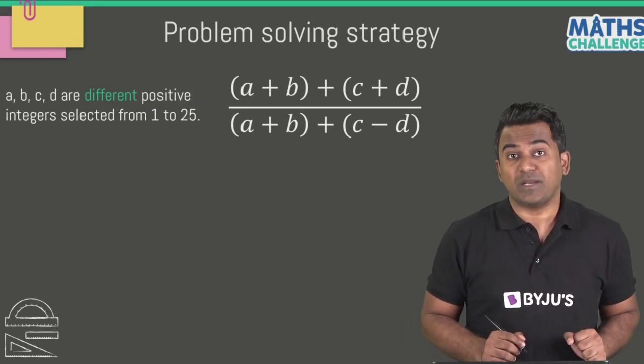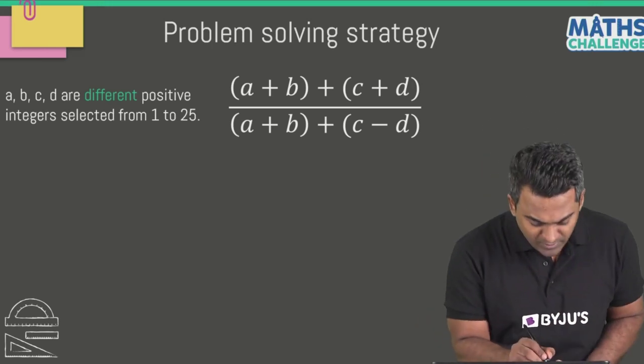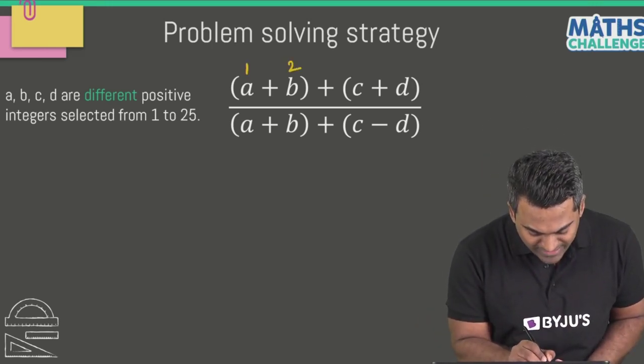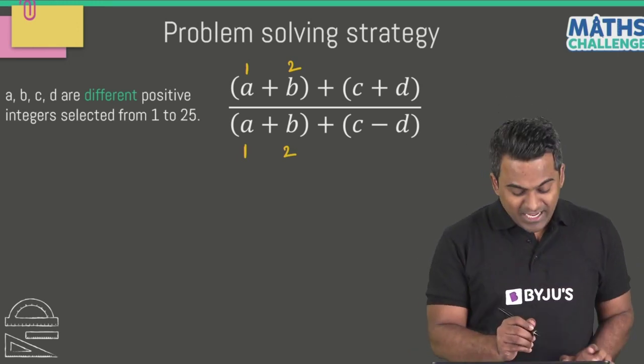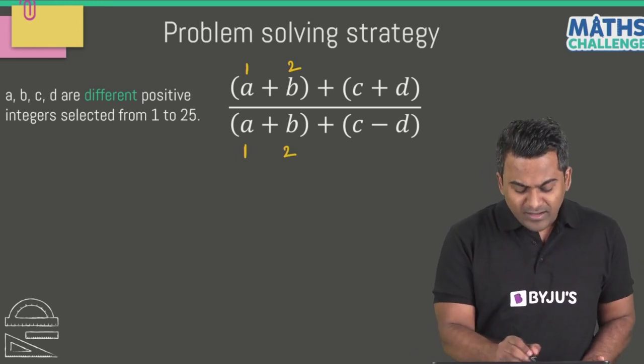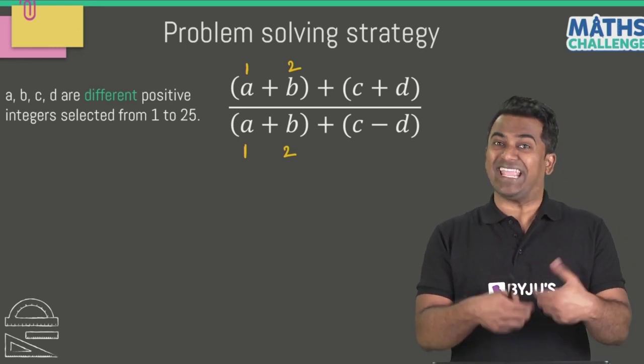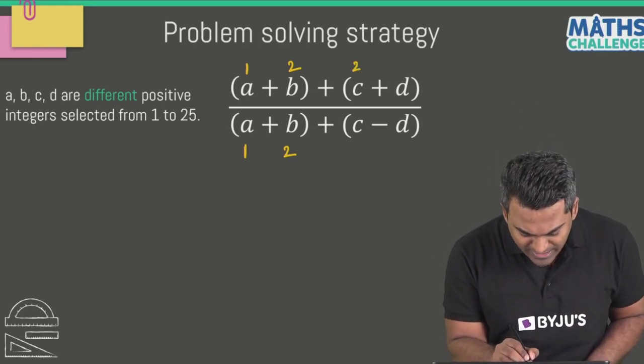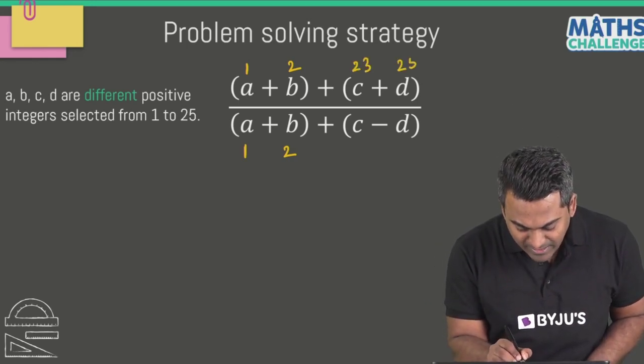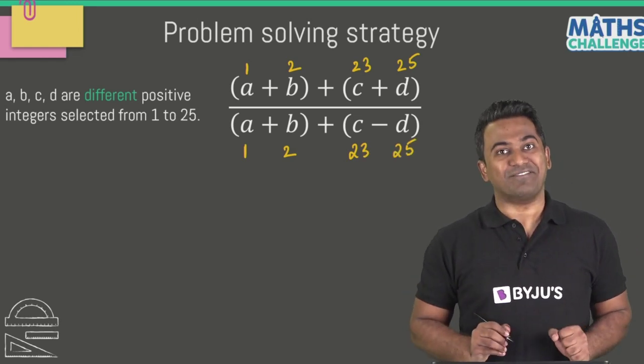What values shall we be selecting for that? Well A and B have got to be as small as possible, so A can only be 1 and B can be 2. But this time, if I want to make the denominator equal to 1, the value of C minus D I can make as minus 2. How am I going to do that? Well C can be 23 and D can be 25 this time.